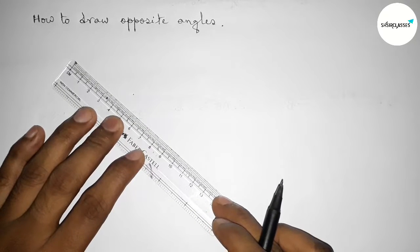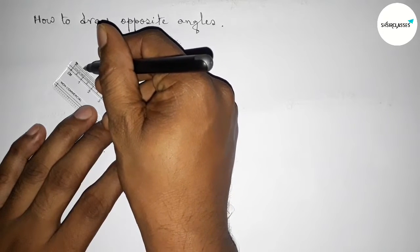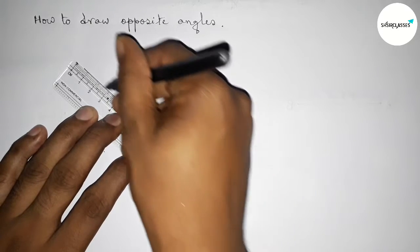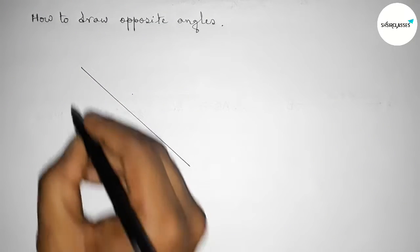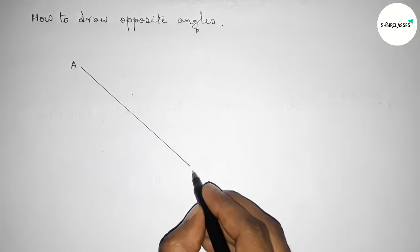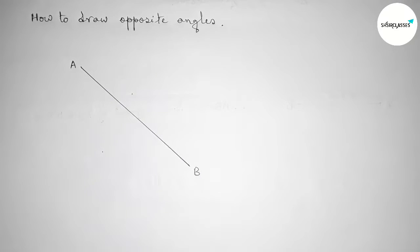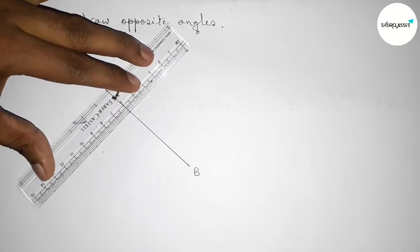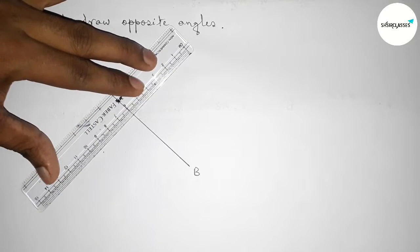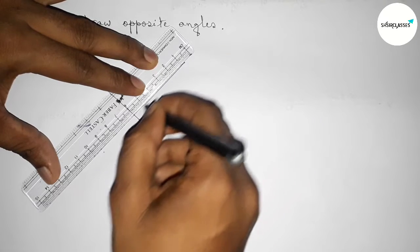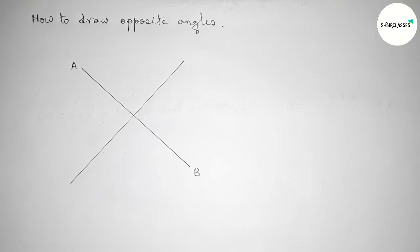we have to draw here a straight line by this way. So first, drawing here a line of any length and taking here A and here B. And drawing another line of any length, so drawing here another line by this way